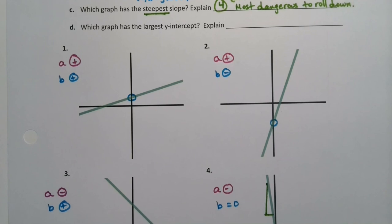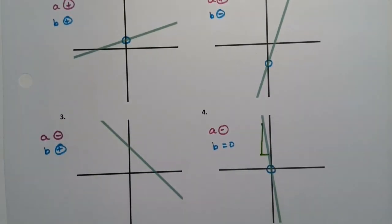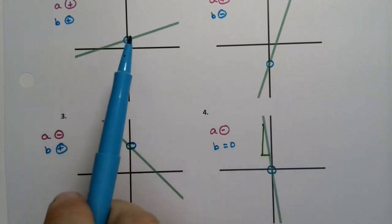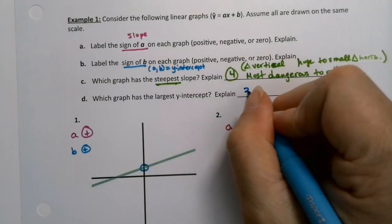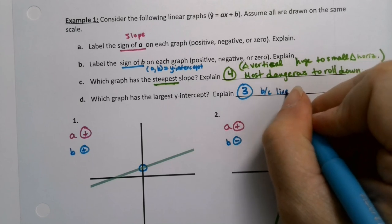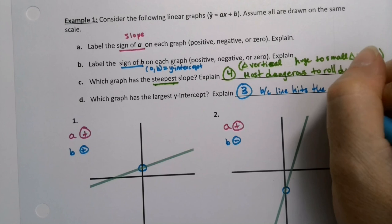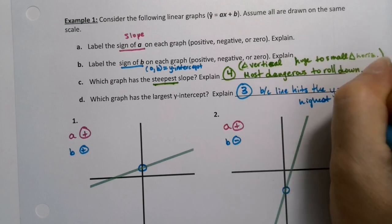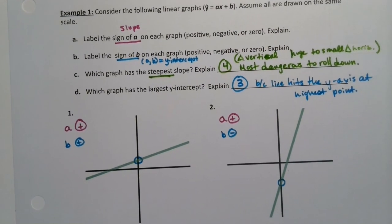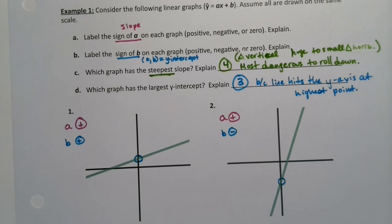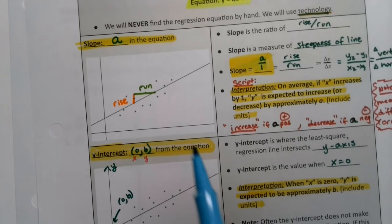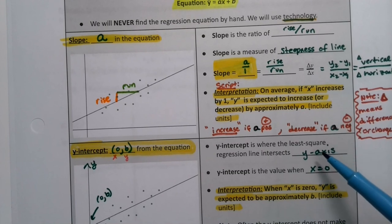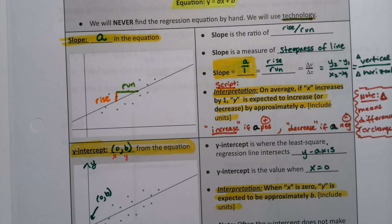Now which one has the largest y-intercept? The y-intercept is where it hits the y-axis, which, funnily enough, the largest one's the one I didn't circle. It's right there, because that's the highest up. It's the largest up, so it'd have to be number three, because the line hits the y-axis or intersects the y-axis at the highest point. This example has us just practicing a little bit with understanding a and b - the rise over the run and where it hits the y-axis. What we have not dealt with yet is the interpretation piece, but we'll hit that in another example.